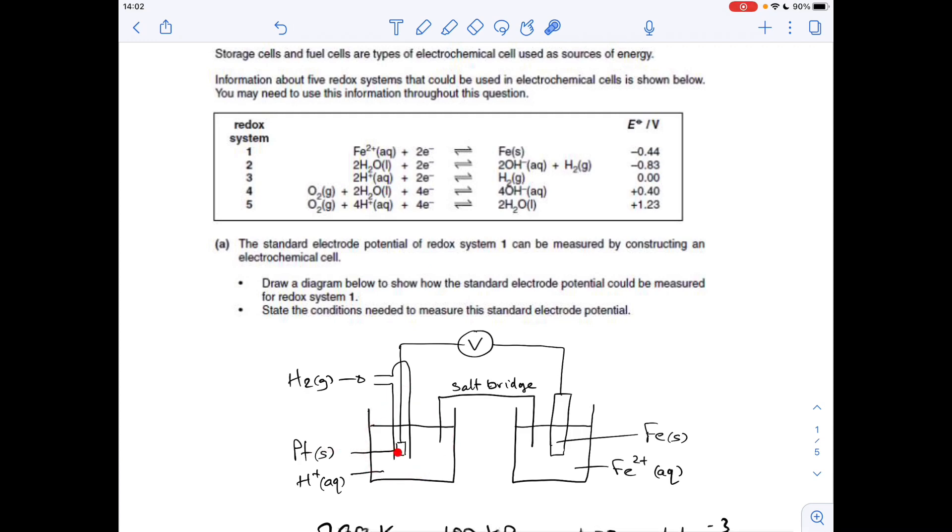That's your platinum electrode, your H+ ions aqueous, your hydrogen gas going in. And then that's linked to the iron electrode on the other side, dipping into a solution of Fe2+ ions.